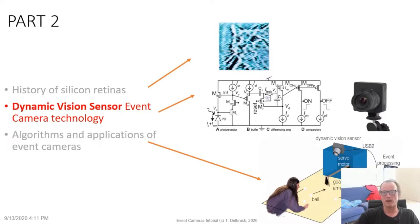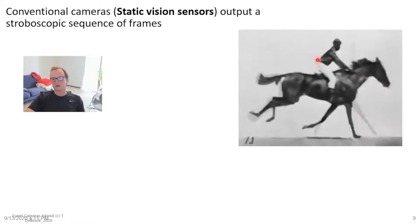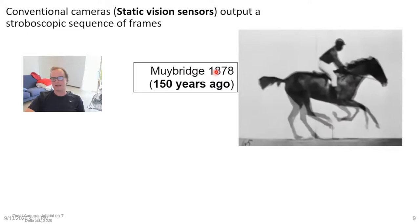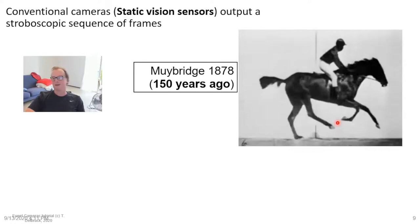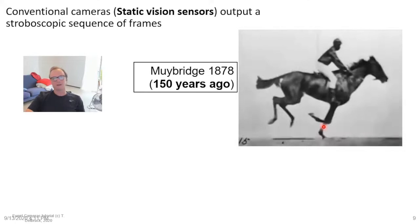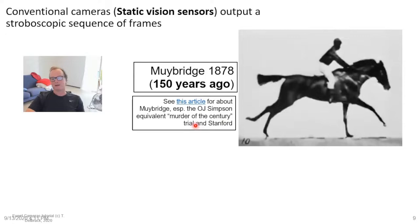Now let's go into the second part of the tutorial: Dynamic Vision Sensor event camera technology. Let's compare conventional cameras — so-called static vision sensors — outputting a stroboscopic sequence of frames. This idea has been around for 150 years. The famous first 40-frame movie shot by Muybridge in 1878 established for his sponsor Leland Stanford that all four feet of a horse were off the ground simultaneously.